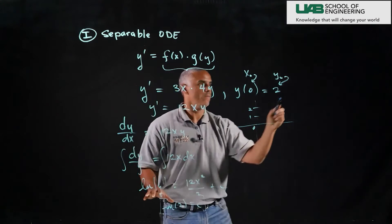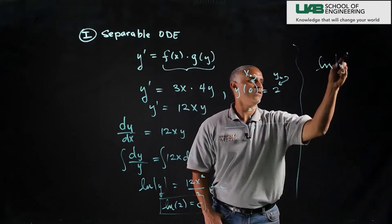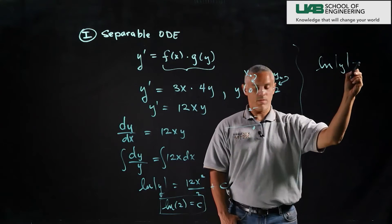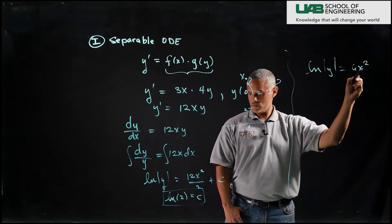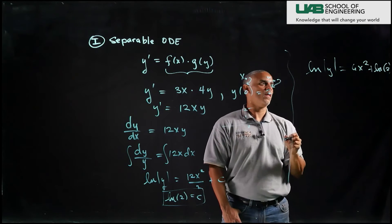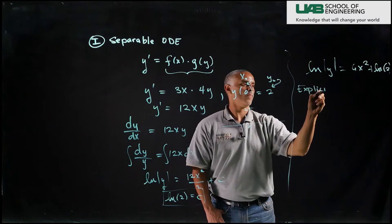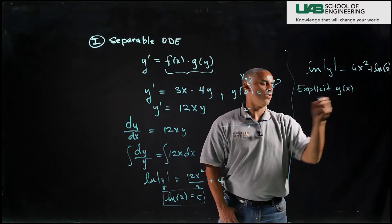If I collect everything I get the natural log of the magnitude of y is 6x squared plus ln 2. And now I want an explicit solution y of x.